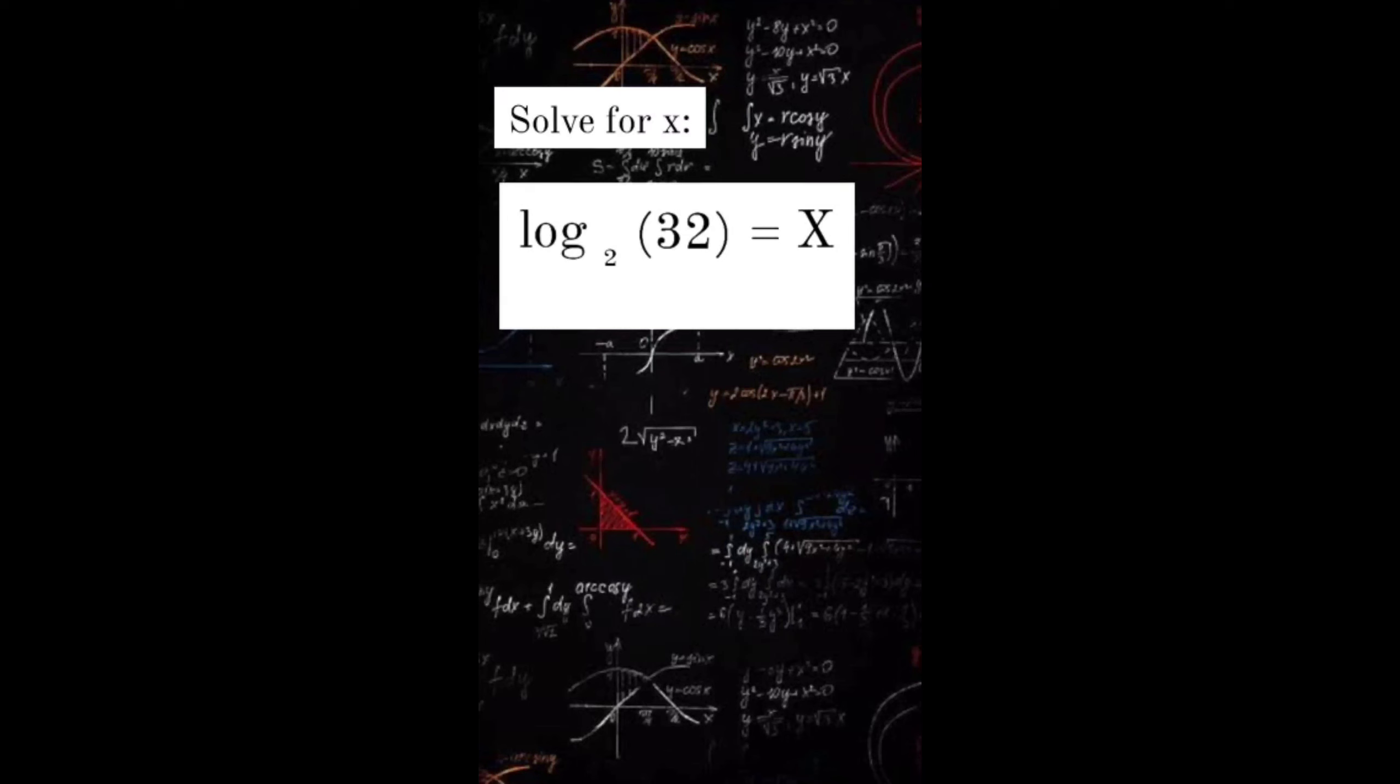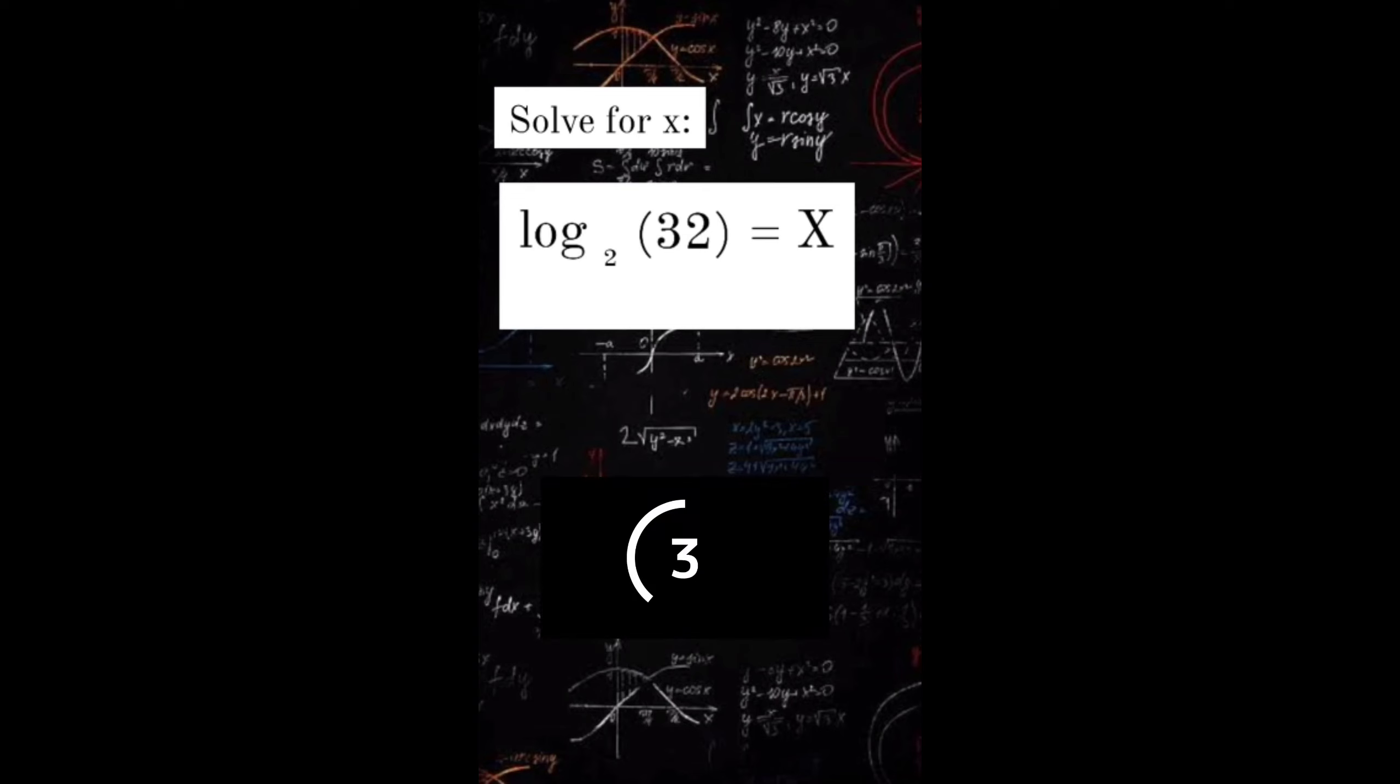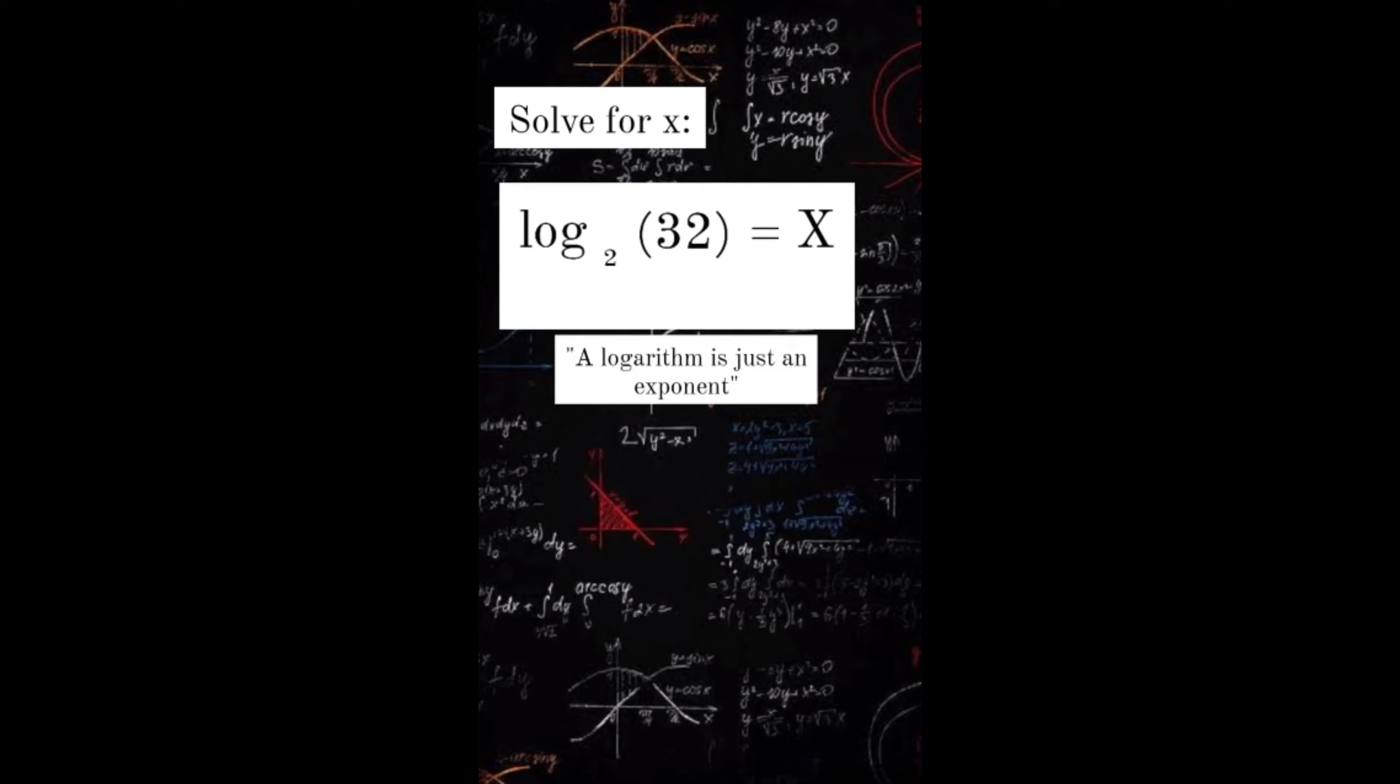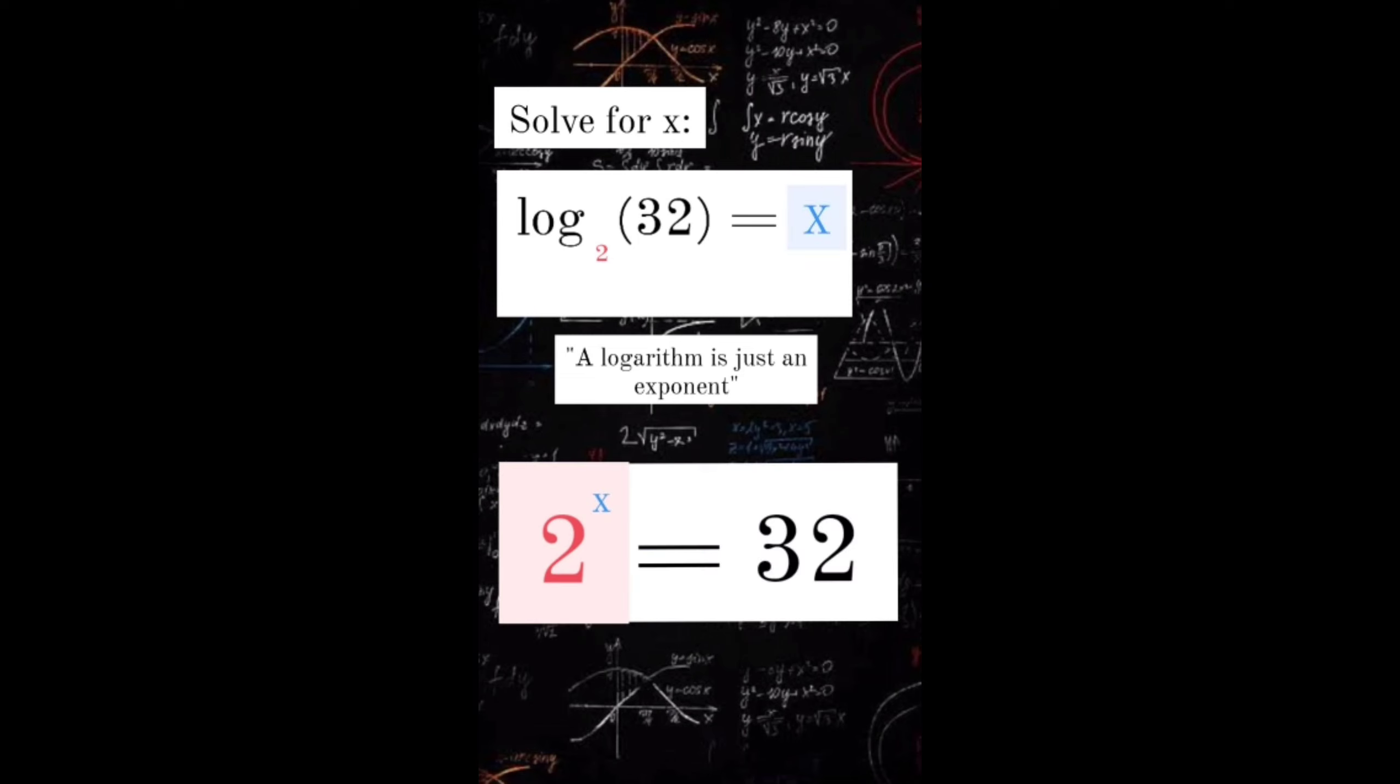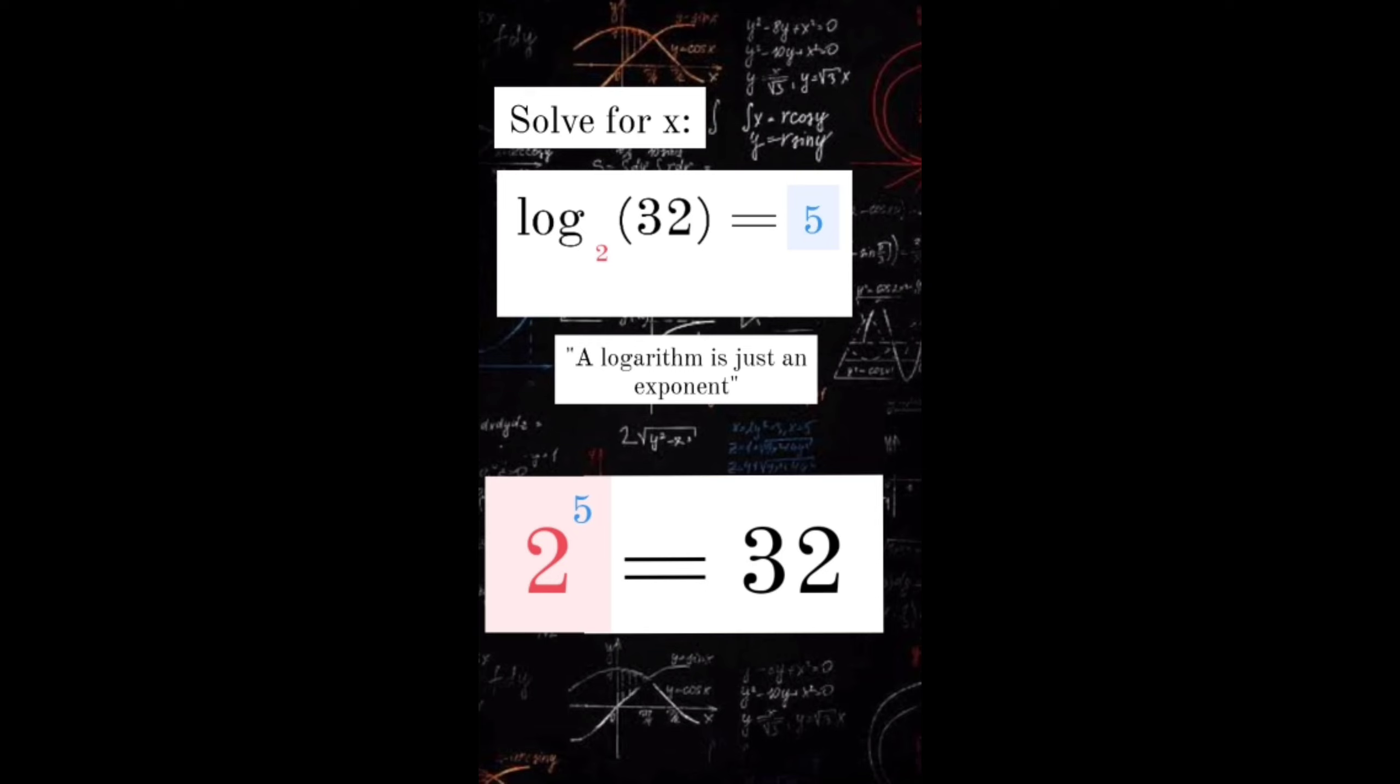Log base 2 of 32 equals x. Solve for the value of x. A logarithm is just an exponent. To solve it, change the logarithm into its exponential form. 2 is our base, x is the exponent. So we have 2 raised to x equals 32. What should be the value of x to make the equation true? That is 5. 2 raised to the 5th power is 32. Therefore, log base 2 of 32 is 5.